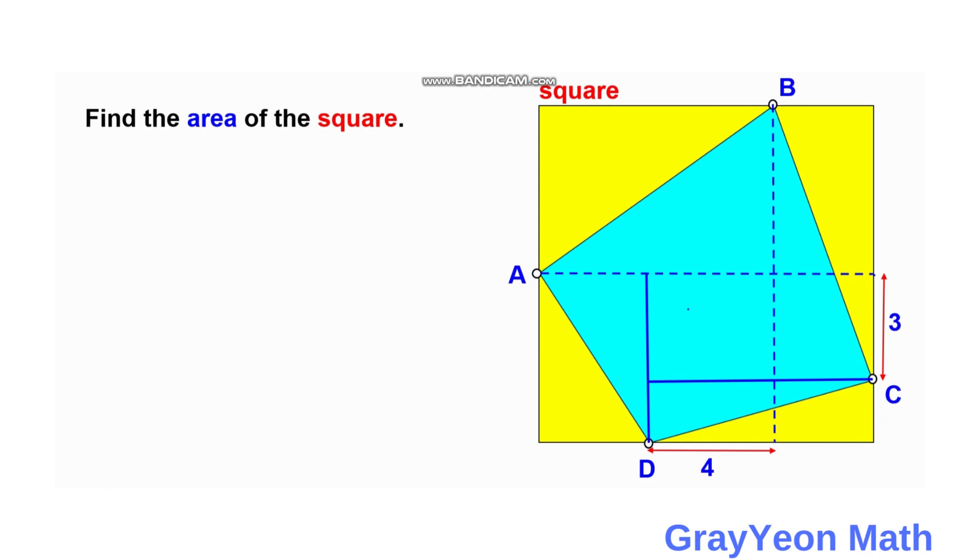We form another smaller quadrilateral. This smaller quadrilateral, or shall we say a rectangle, has an area of 12 square units.